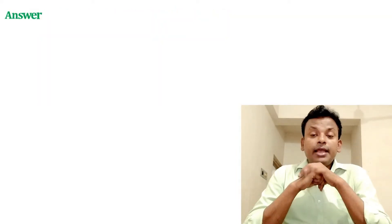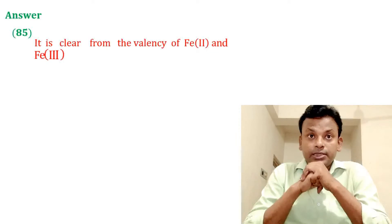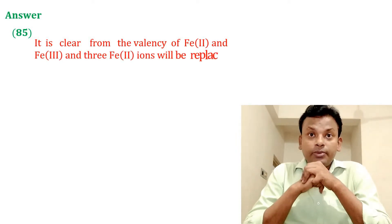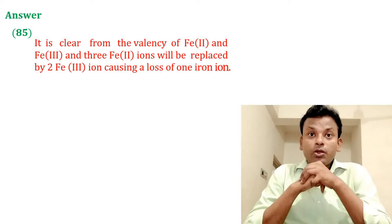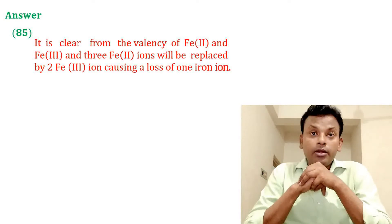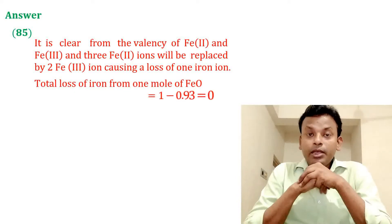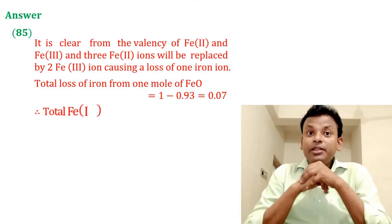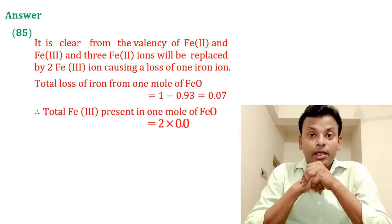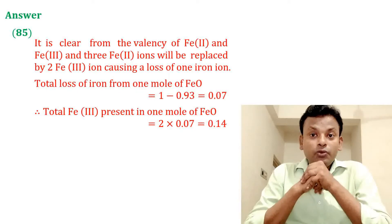Answer is 85. From the valency of Fe²⁺ and Fe³⁺: 3 Fe²⁺ ions will be replaced by 2 Fe³⁺ ions, causing a loss of 1 iron ion. Total loss of iron from 1 mol FeO = 1 − 0.93 = 0.07. Total number of Fe³⁺ ions present in 1 mol FeO = 2 × 0.07 = 0.14.